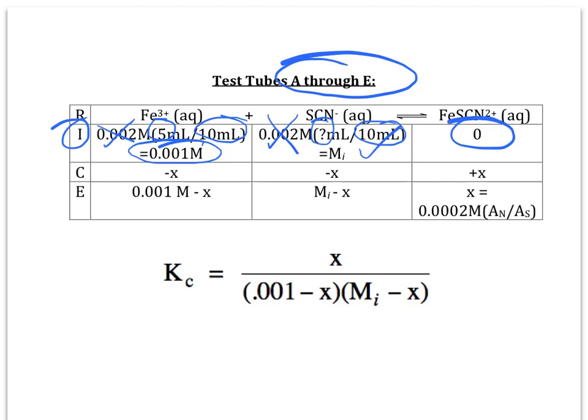And over here, of course, the FeSCN2+ ions have 0 molarity at the beginning before the reaction happens. So, the ions on the left are going to go down by X, and the right, using a 1 to 1 mole ratio, is going to go up by X. So, the Fe3+ ions have a molarity of 0.001 molar minus X at equilibrium. The SCN- ions have a molarity of Mi minus X at equilibrium, and keep in mind that you actually know the value of Mi in test tubes A through E.